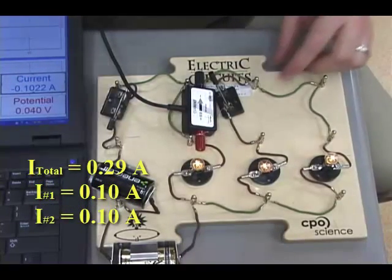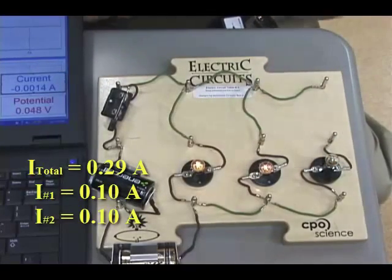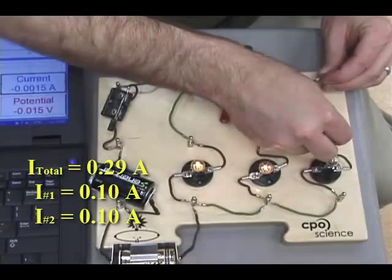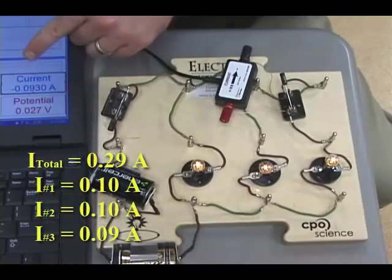What about lightbulb three? Why isn't lightbulb three lit? Because it's an open circuit and I can measure current. 0.093.